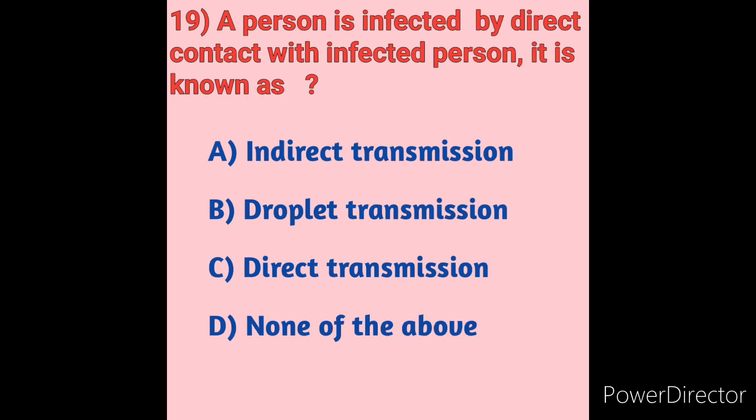Question 19: A person infected by direct contact with an infected person — this is known as — Option A: Indirect transmission, Option B: Droplet transmission, Option C: Direct transmission, Option D: None of the above. Some infections spread by direct contact with the infected area to another person's body or via a contaminated surface. Examples of direct contact include touching, kissing, sexual contact, contact with oral secretions, or contact with body lesions. Option C — direct transmission — is the correct answer.